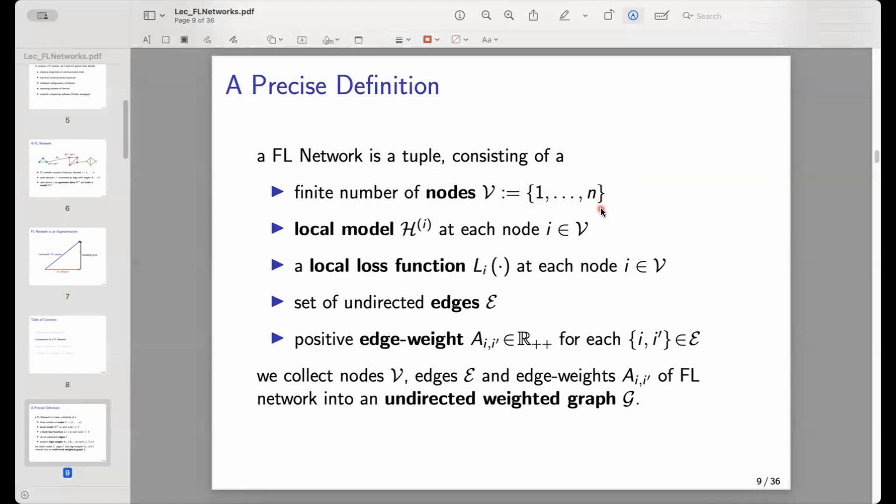Within this course, when we talk about nodes of a federated learning network, we always mean the first n natural numbers. This is not a severe restriction to use the first natural numbers, but what is a restriction is that we consider this n given. So we assume a finite number of nodes, but this number can be arbitrarily large.